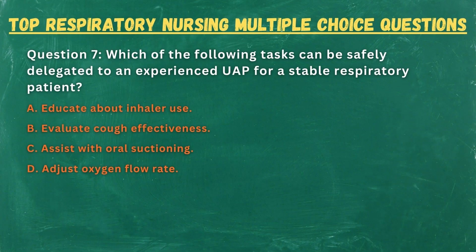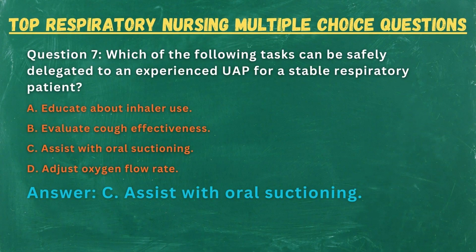Question 7. Which of the following tasks can be safely delegated to an experienced UAP for a stable respiratory patient? A. Educate about inhaler use. B. Evaluate cough effectiveness. C. Assist with oral suctioning. D. Adjust oxygen flow rate. Answer: C. Assist with oral suctioning.